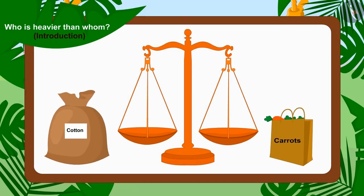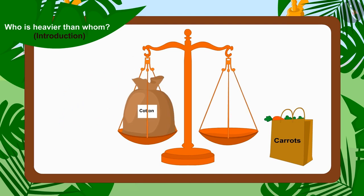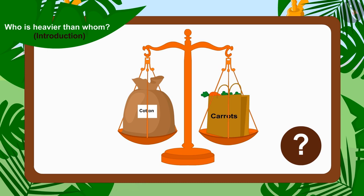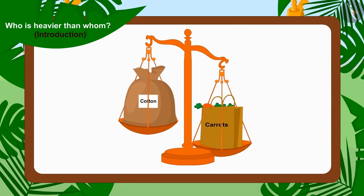Uncle first placed Bhola's sack on a plate of the scales and placed Bunny's bag of carrots on the second plate. Children, can you tell whose item is lighter and whose item is heavier? You can stop the video and find the answer. Well done, children — you have found the right answer. The weighing scale tipped towards Bunny's carrot bag. That is why Bunny's carrot bag is heavier than Bhola's bag full of cotton.